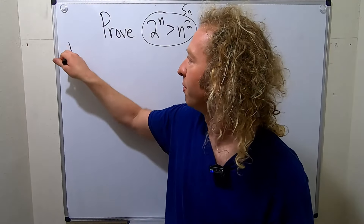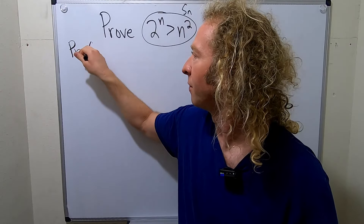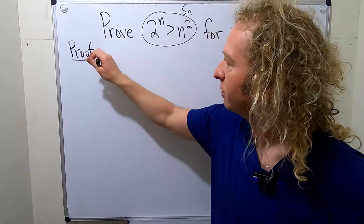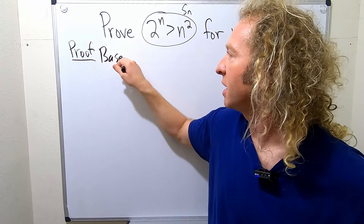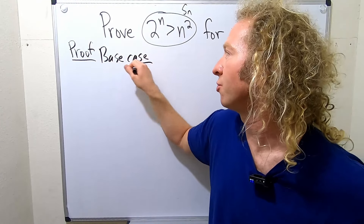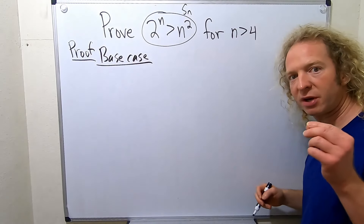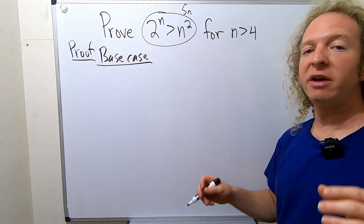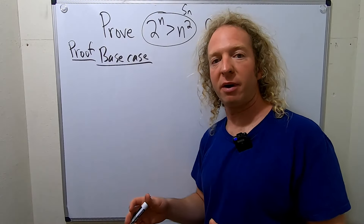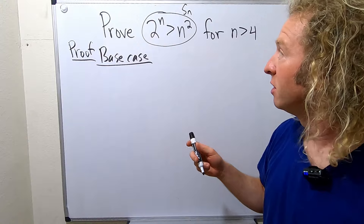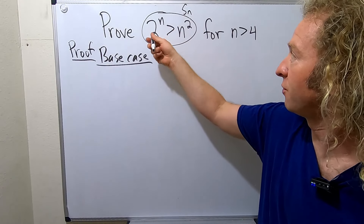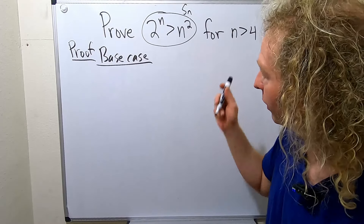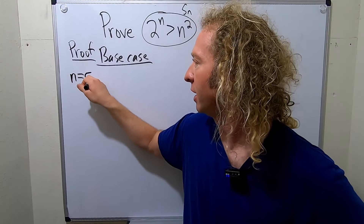Let's do the proof. I like to start induction proofs by writing down the base case. The base case is the starting point — you show it's true for the smallest integer you're working with. In this case the smallest integer bigger than 4 is 5, so we need to show that S sub 5 is true, meaning we show this holds when n equals 5.